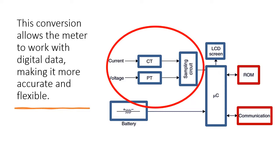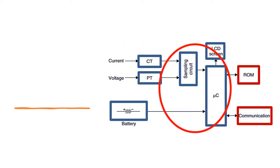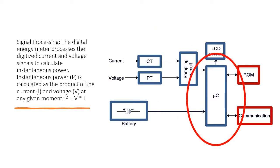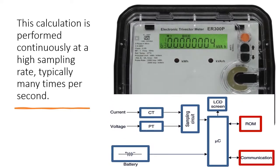The digital energy meter processes the digitized current and voltage signals to calculate instantaneous power. Instantaneous power (P) is calculated as the product of the current (I) and voltage (V). At any given moment, P equals V times I. This calculation is performed continuously at a high sampling rate, typically many times per second.